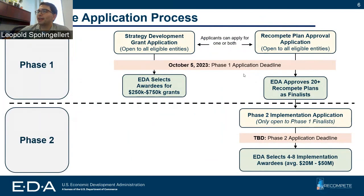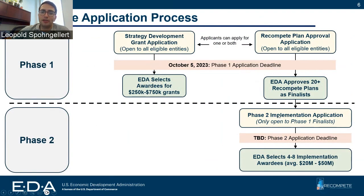We have this visual here to help folks understand the process for this program. In Phase 1, which is open right now, one can apply for a strategy development grant, which comes with a dollar award, or recompete plan approval, which is the key to getting to Phase 2. Only by applying for recompete plan approval will you become potentially eligible to apply for a Phase 2 award. The deadline for Phase 1 for either application is October 5th, 2023.